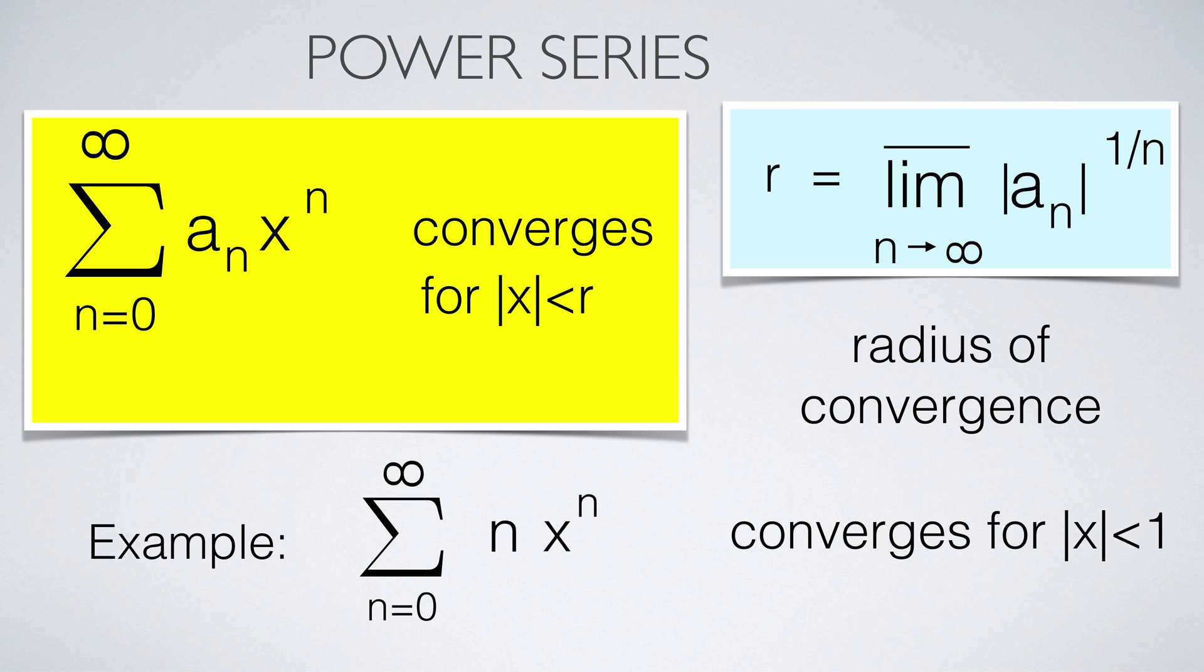Power series are also a function, but now the variable is not in the exponent like before, but in the base. Such series have a radius of convergence. For the absolute value of x smaller than this radius, the series converges. There is a formula for the radius of convergence given as a lim-sup.